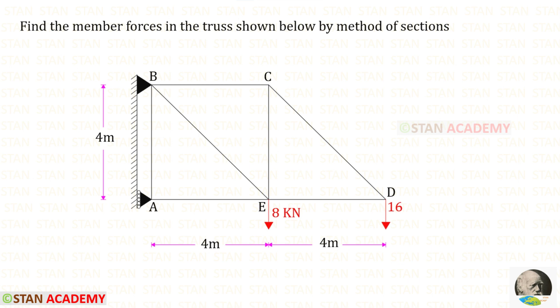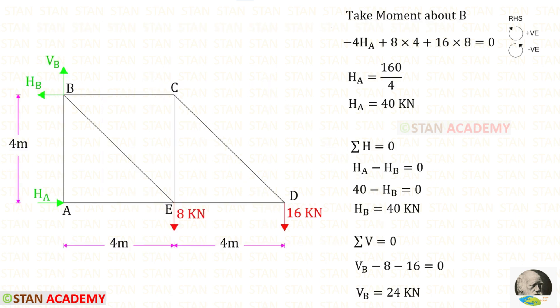Hello everyone, today we are going to analyze this truss by method of sections. I have analyzed this truss using method of joints also. You can click the link in the description and watch that video. In this truss, we have to find the horizontal reactions HA and HB, and we also have to find the vertical reaction VB. In the method of joints itself, I have explained clearly how to find them.